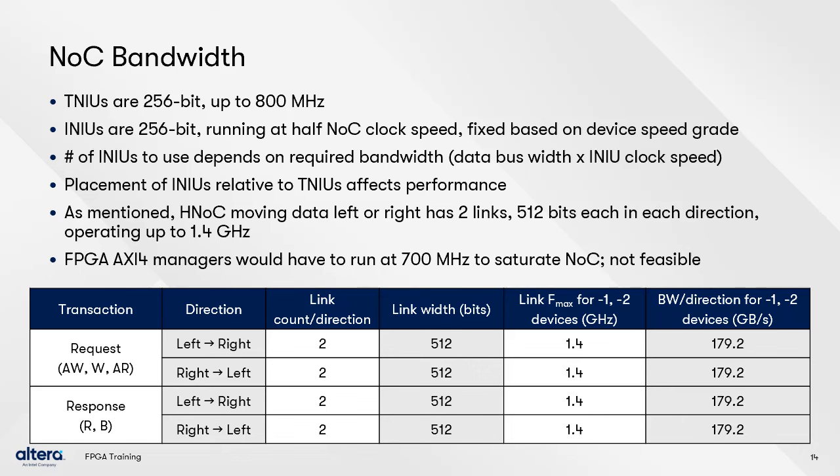To fully saturate this amount of bandwidth, an AXI-4 manager in the FPGA fabric would need to run at the full 700 MHz speed of the INIU it's connected to. This isn't really feasible, so the fabric NOC option mentioned earlier is required to help saturate the bandwidth.